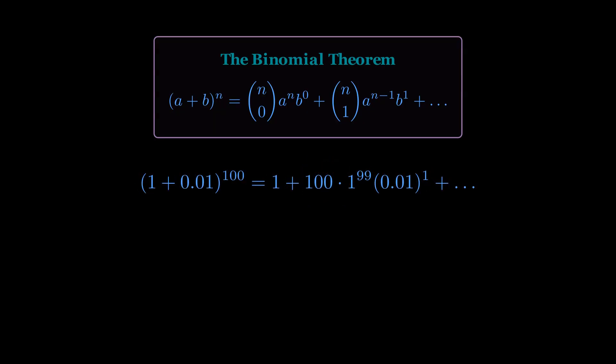The rest of the term is straightforward. 1 to the 99th is 1, and 0.01 to the first power is just 0.01. So, we are left with 100 times 0.01. And that product is exactly 1. The first two terms summed to 2.